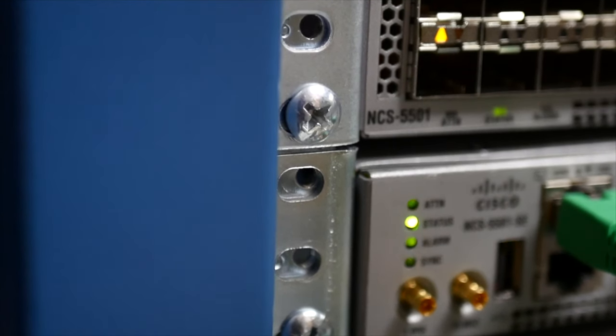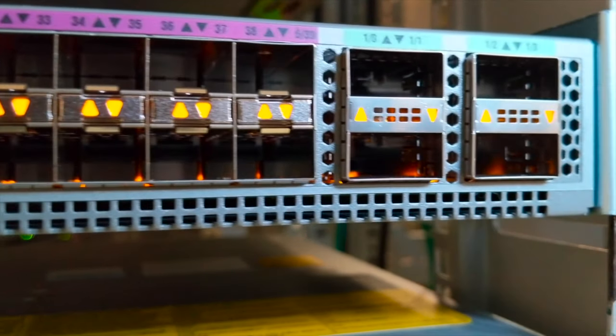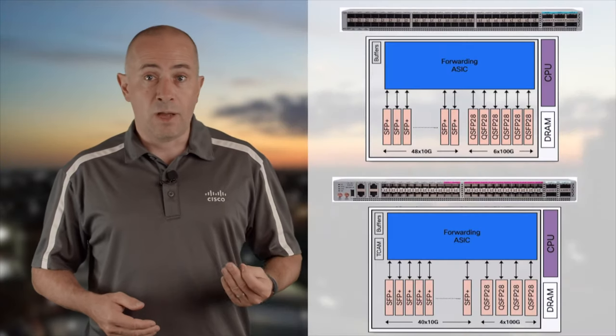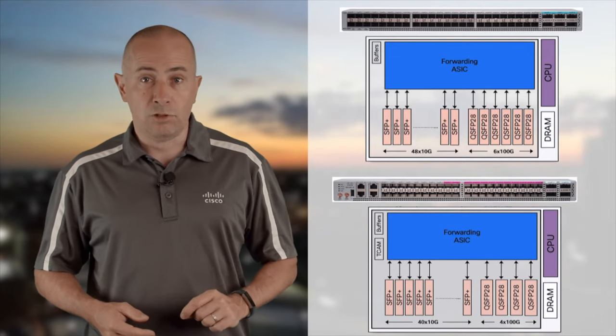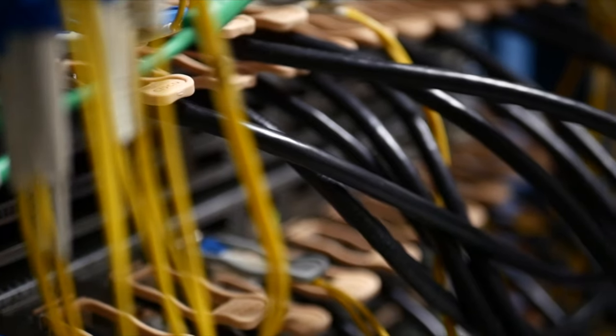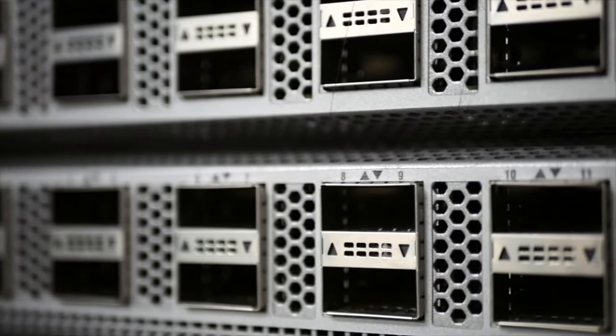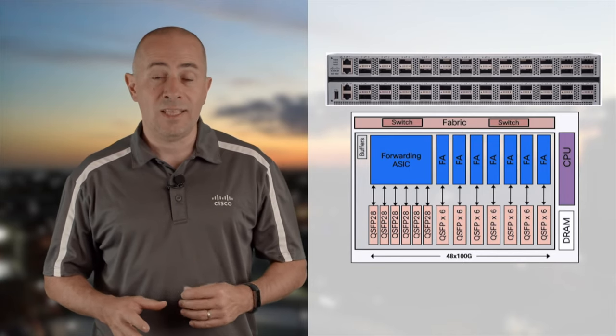The NCS5501 and 5501-SC: 1 rack unit, 40 or 48 SFP ports at 1G or 10G, plus 4 or 8 QSFP ports for 40G, 4x10G, or 100G optics. Powered by a single Qumram MX NPU; the non-SC 5501 is slightly oversubscribed. The NCS5502 and 5502-SC: 2RU, 48 QSFP cages, twice the rack units but 6 times more bandwidth, no native SFP ports, powered by 8 Jericho NPUs interconnected with 2 fabric engine FE3600.